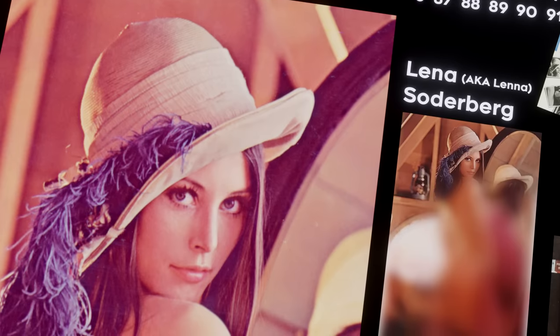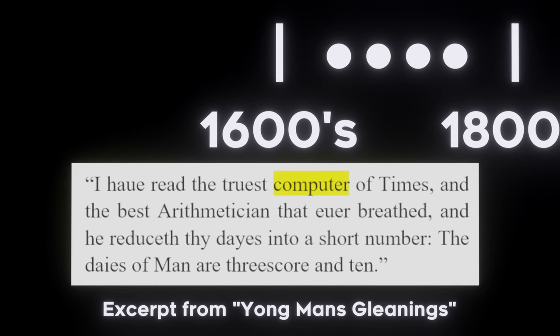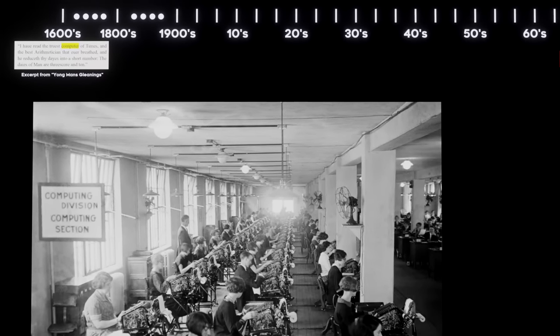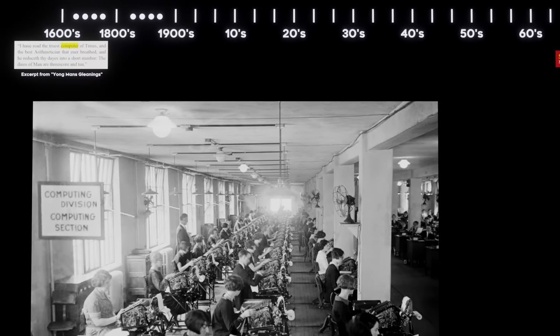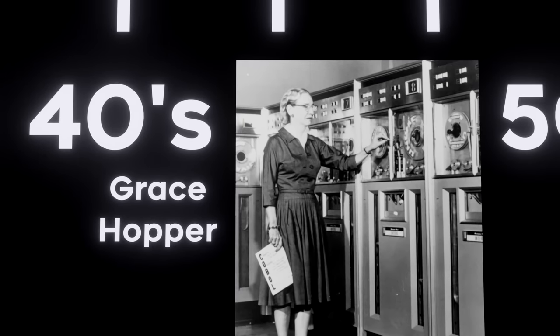There's a lot of the history of computer science that has been intentionally ignored and underdocumented. The word 'computer,' in its earliest definition, did not refer to a machine — it meant a person who computes, someone whose job was to sit down and grind out tedious number crunching to solve problems. And the vast majority of these human computers were women. Even as far back as the 1800s, women have been intertwined with the world of computer science. Ada Lovelace is widely credited as the first computer programmer. Grace Hopper is known for inventing the first compiler — converting human readable words into machine readable ones and zeros — which eventually became COBOL. She also coined the term 'computer bug' when a literal moth got stuck in the Harvard Mark II.